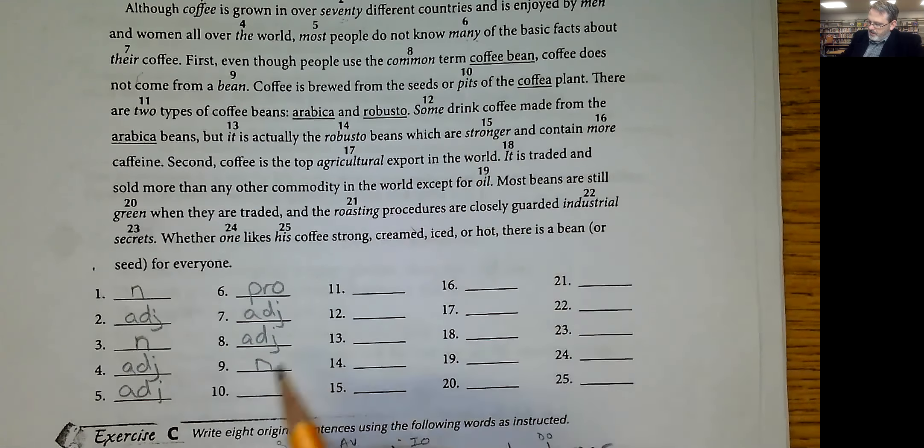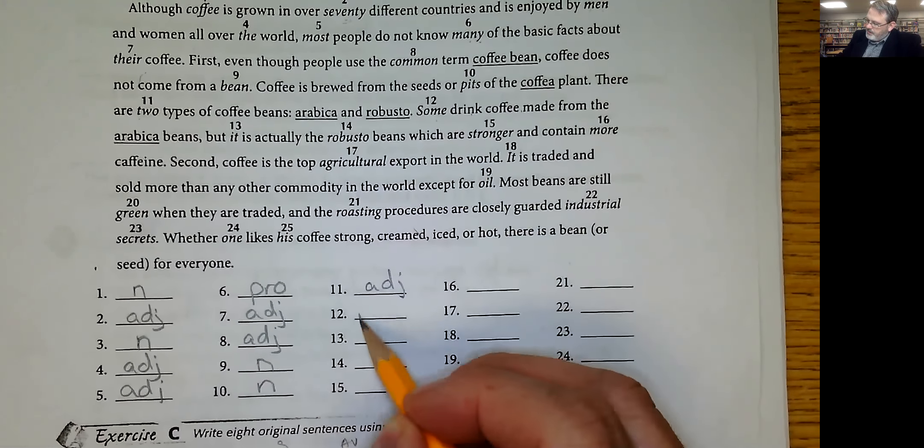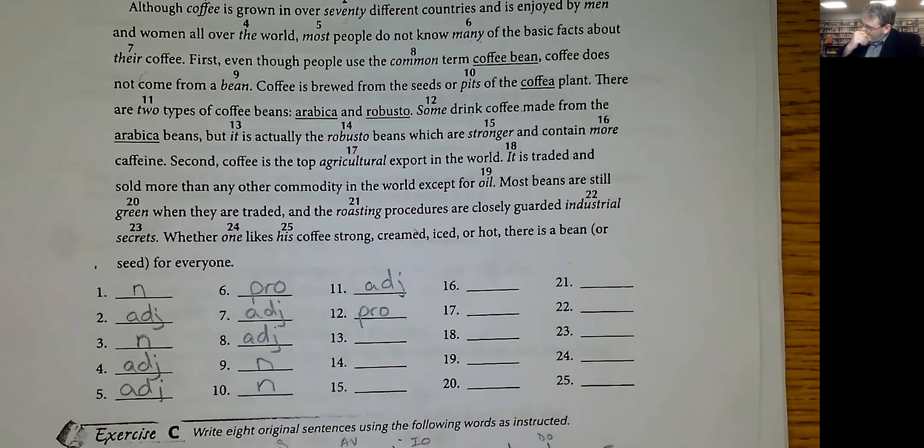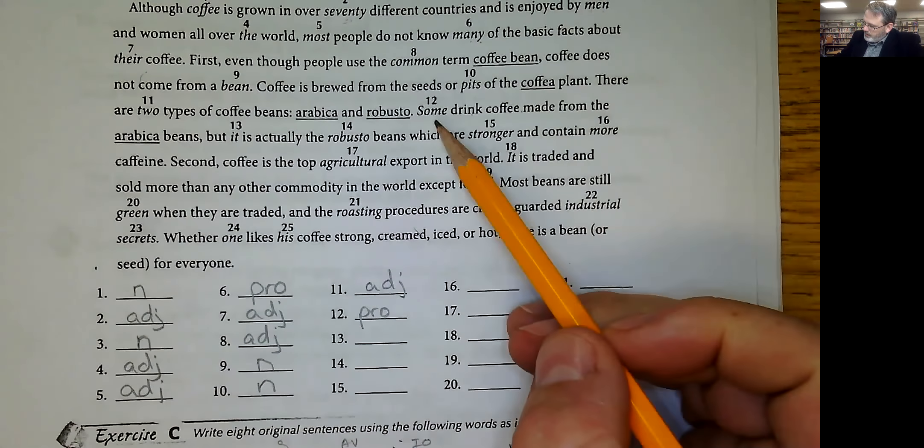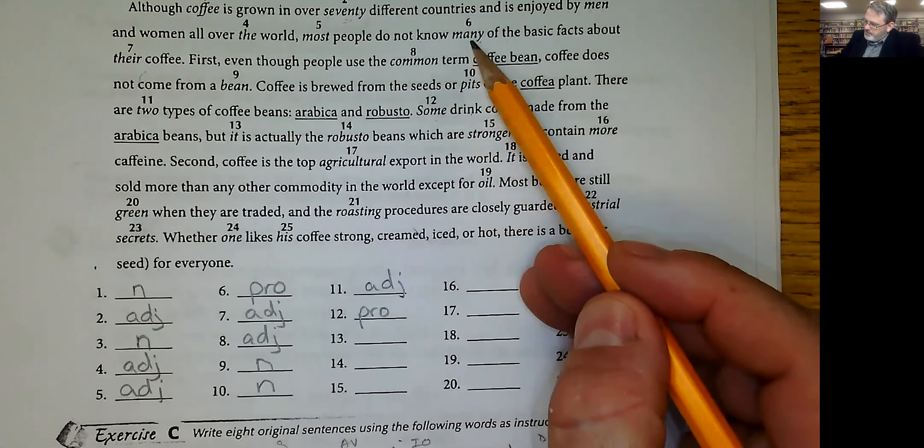There are two types, how many types, two types, it's an adjective. Some drink coffee, some is a pronoun. Some is a pronoun just like many is a pronoun.